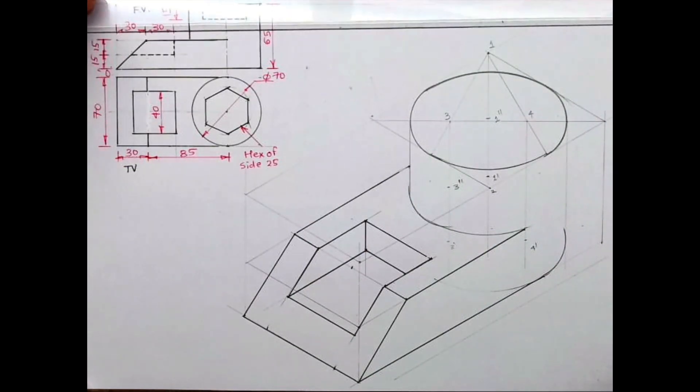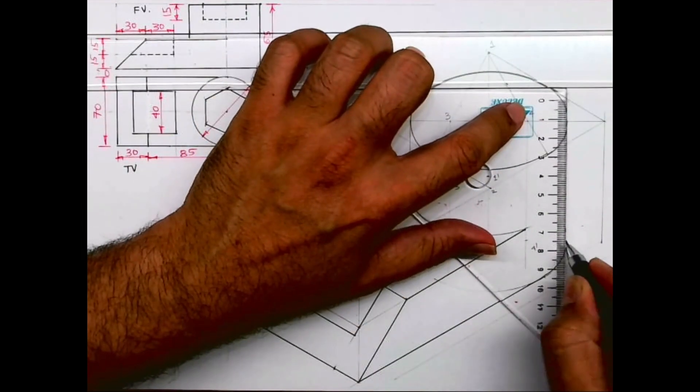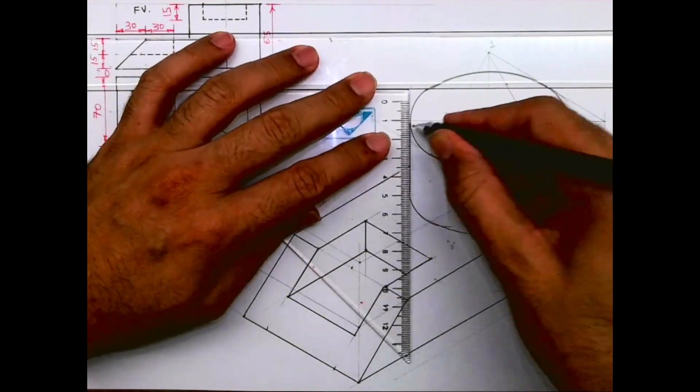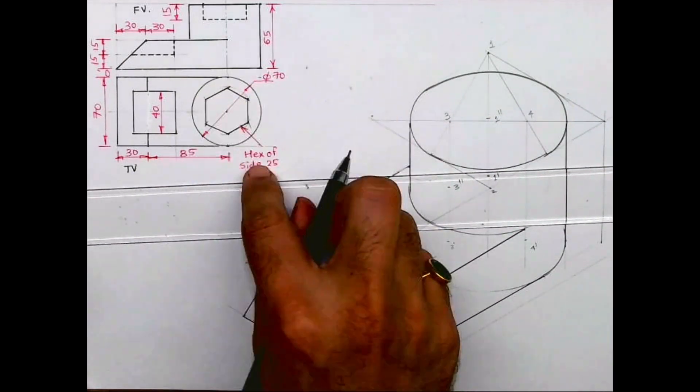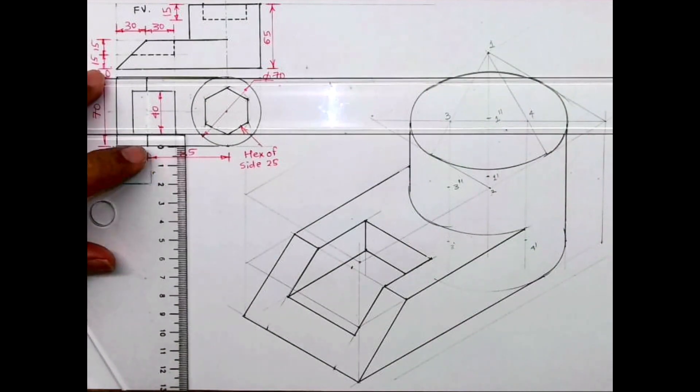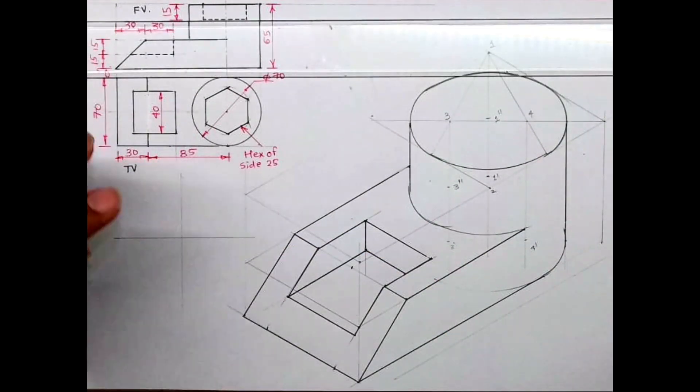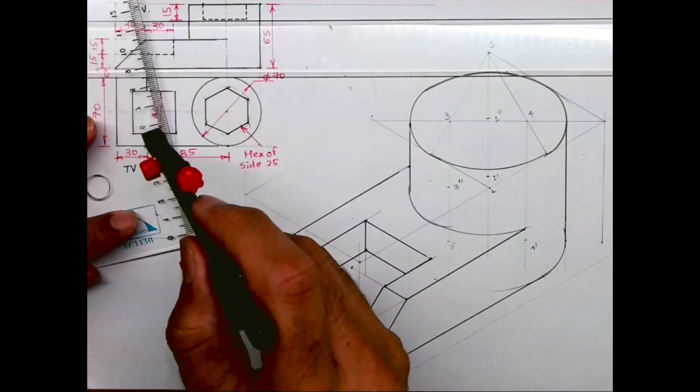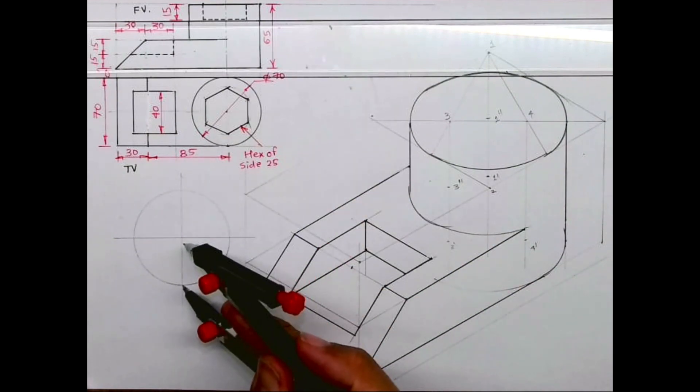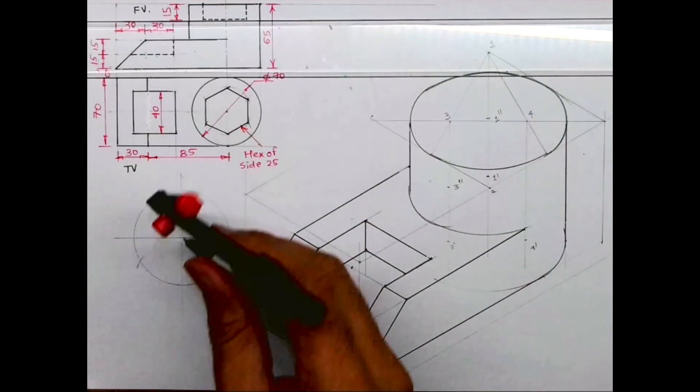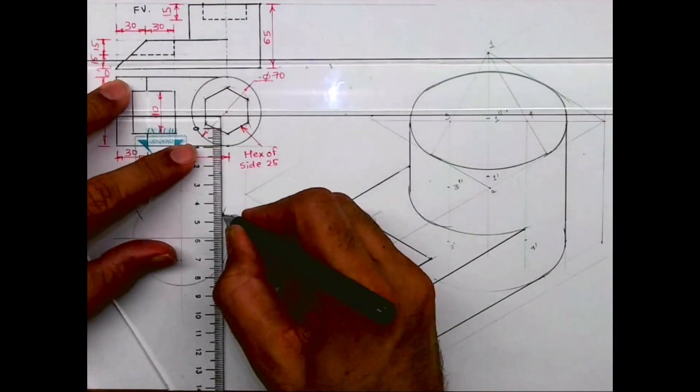Now we need to draw that hexagon. This will be dark, this will be dark. We need to draw now hexagon which is at the center here. So side of the hexagon is 25. So I will draw radius 25. Then from here you cut on both the sides, and from here you cut on both the sides. So you'll get hexagon because it's so vertical.